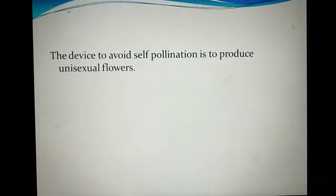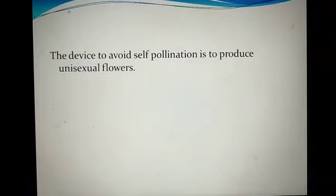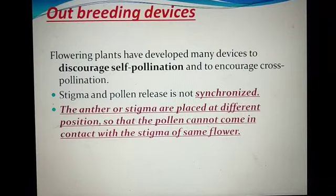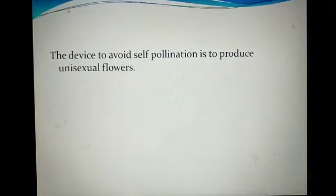The fourth and last device to avoid self-pollination is to produce unisexual flowers. If a plant has unisexual flowers, there are very few chances of self-pollination because the flower is either male or female, which leads to the chance of xenogamy, that means cross-pollination. So the four devices are: first, stigma and pollen not synchronized; second, different positions; third, self-incompatibility; and fourth, unisexual flowers.